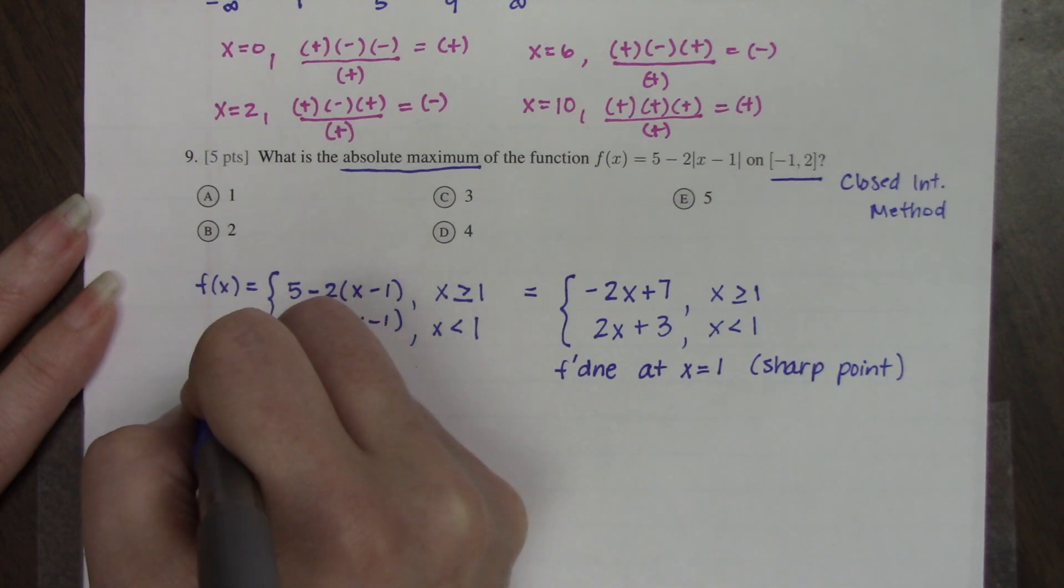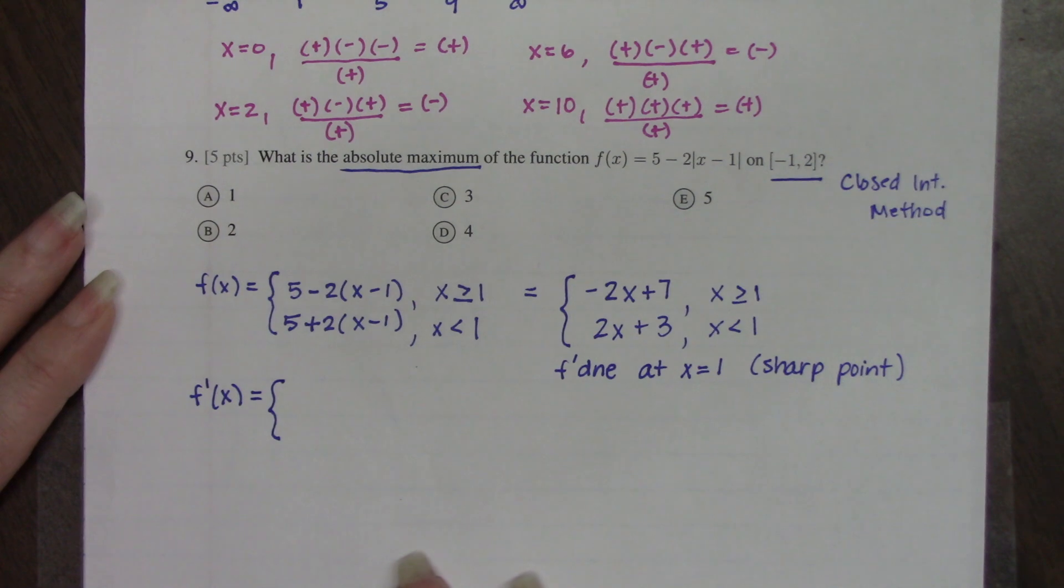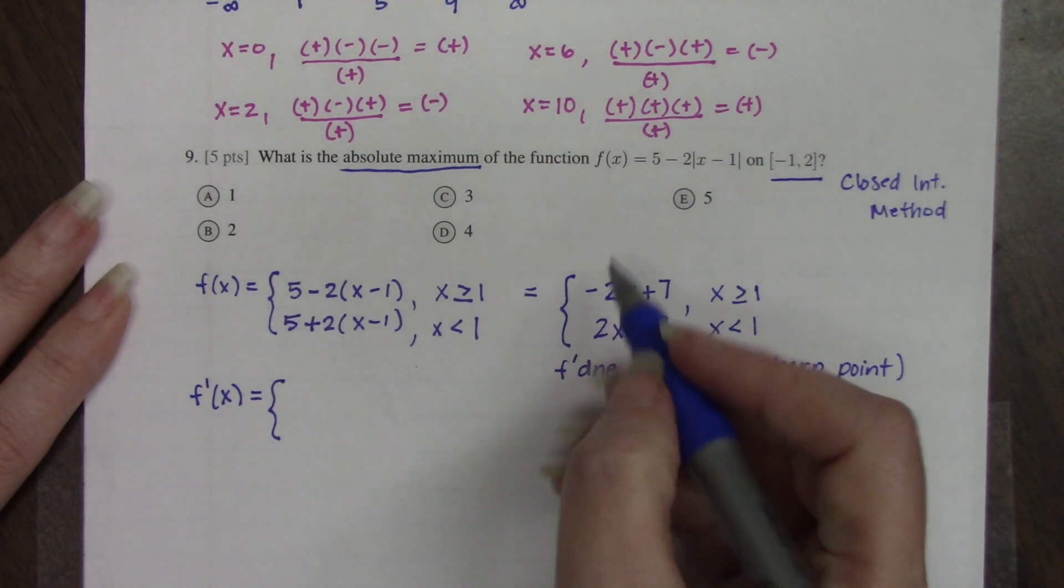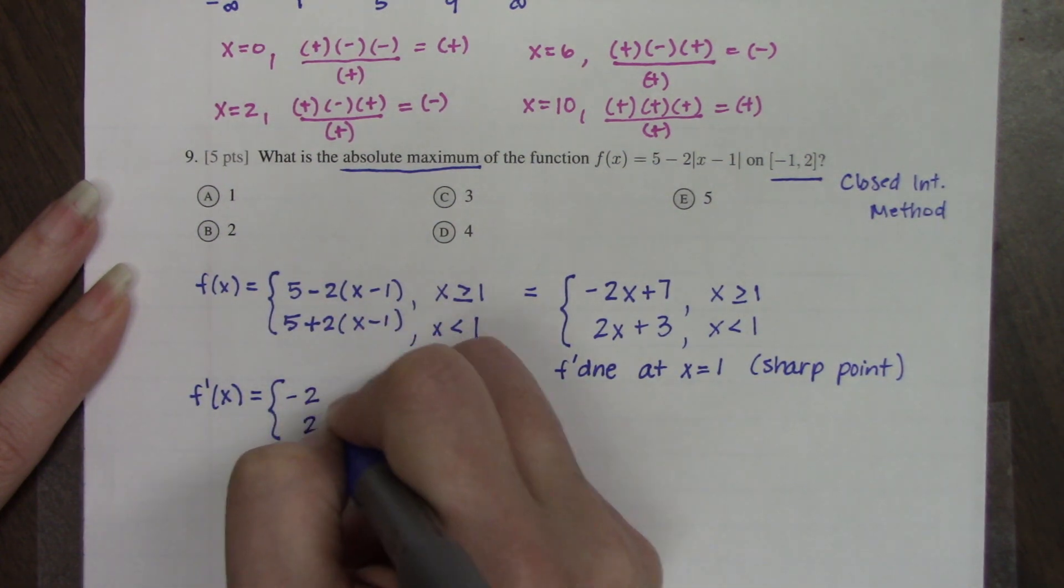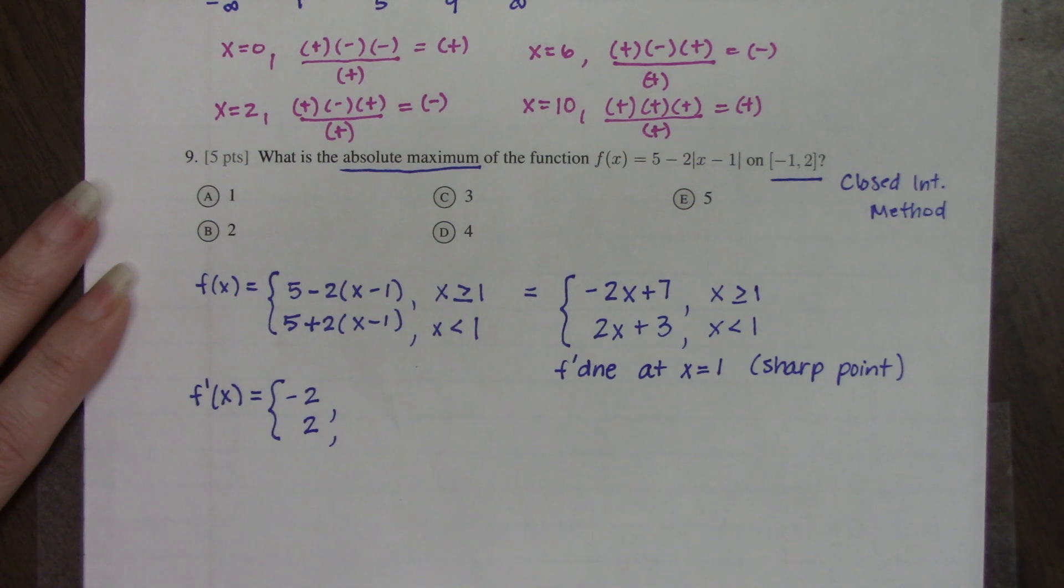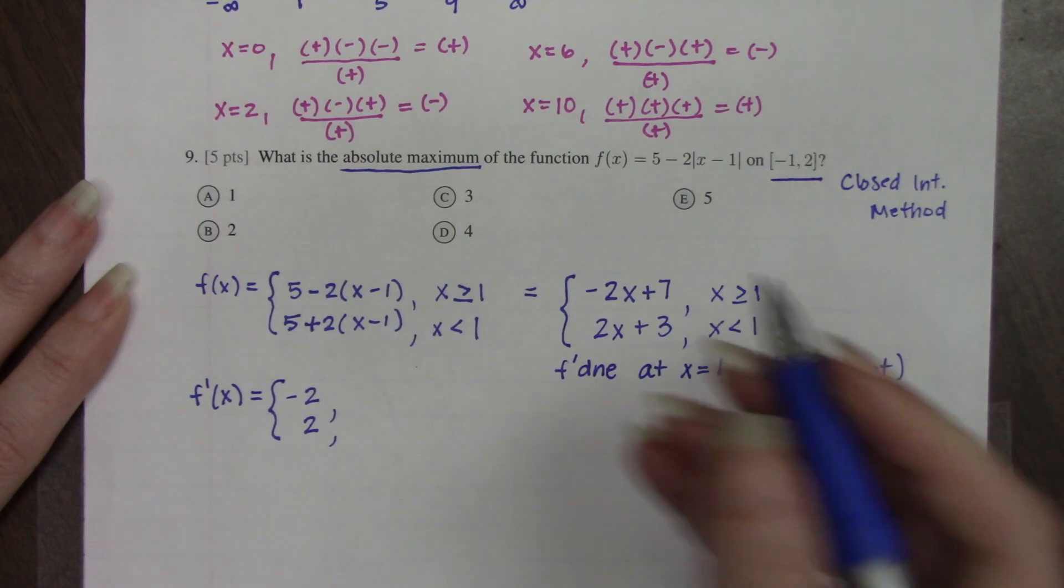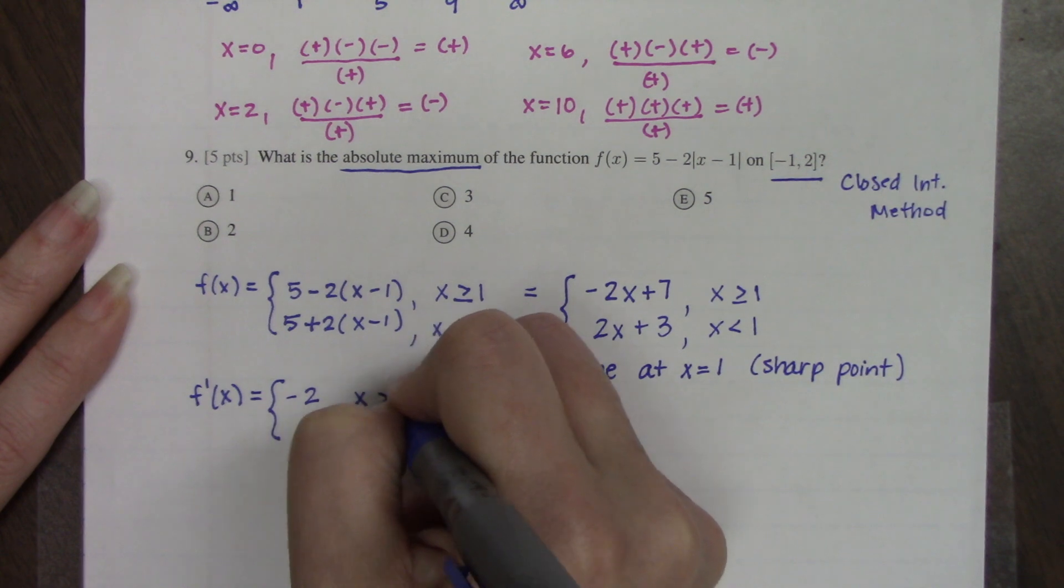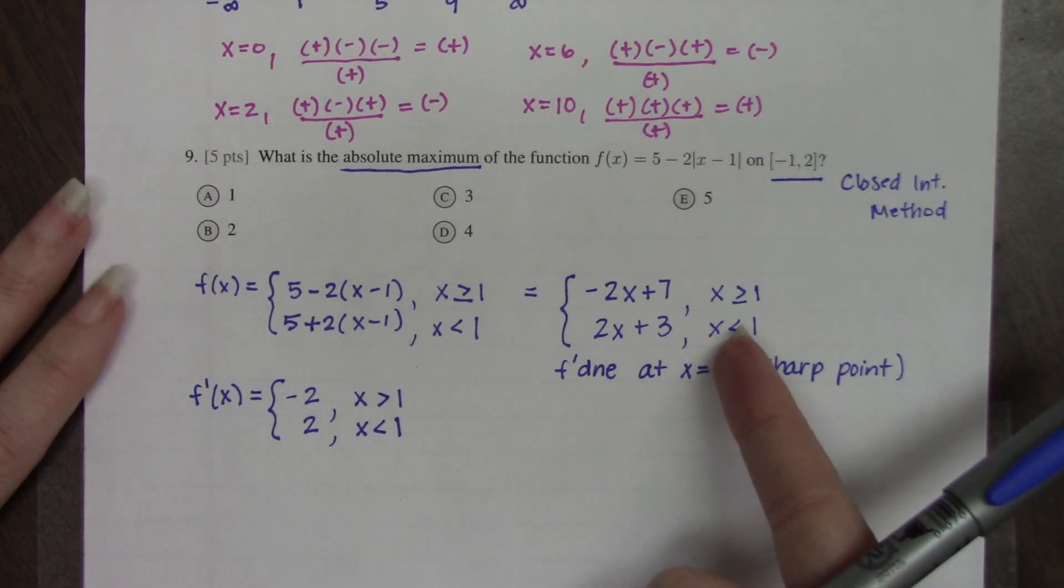Now to find the other type of possible critical value, we need to actually compute the derivative. So you compute the derivative of each piece. The derivative of the first piece is -2. The derivative of the second piece is 2. And when I pull over this domain step, I drop the underline because the derivative does not exist at 1. So we eliminate the equal to case.